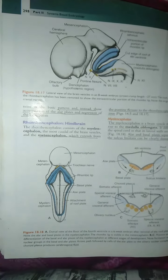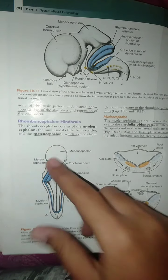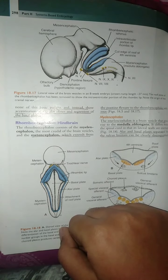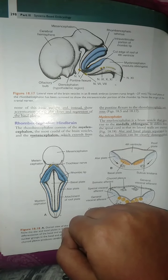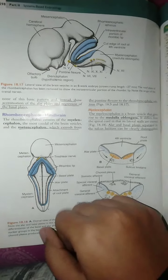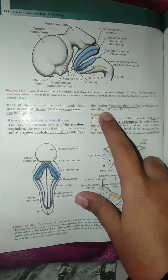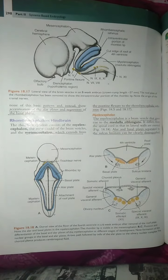We have two parts of rhombencephalon: myelencephalon and metencephalon. Myelencephalon is the most caudal part. Metencephalon is the upper portion, which is where we have to start from the upper part.